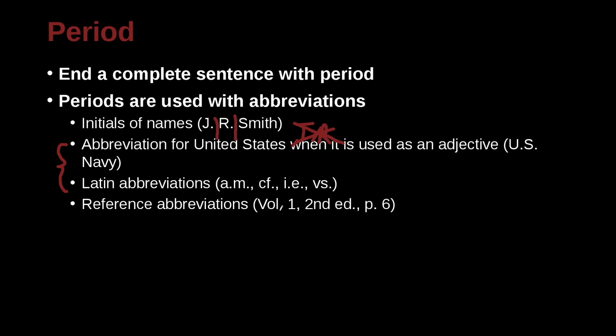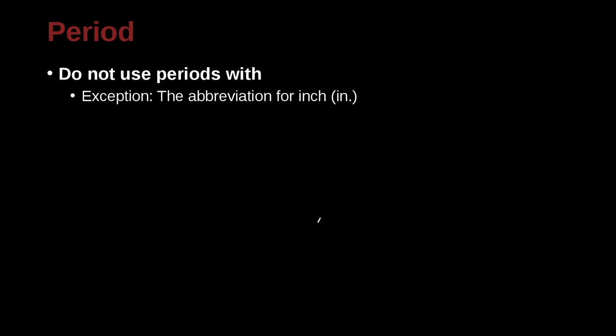If we look at reference abbreviations, for example, volume numbers: volume, period, and then a space, one. And then here we have edition, and edition, ed., has a period, and it should have a space, but because we're using a comma, and commas do not have spaces before them, so that goes up right against the period, and then you have a space. Do not use periods in these kinds of cases. The abbreviation for inch, for example, is a special case.